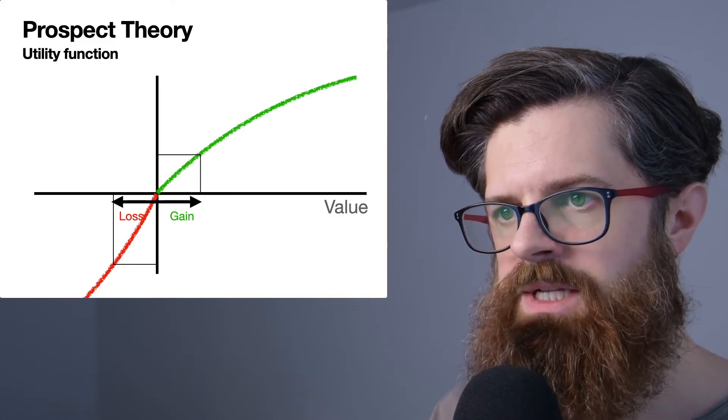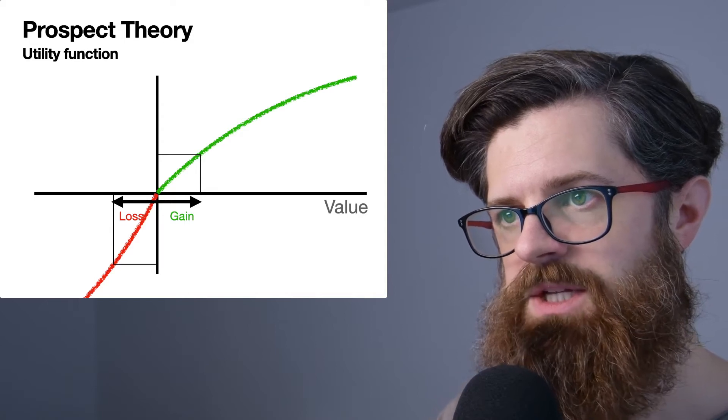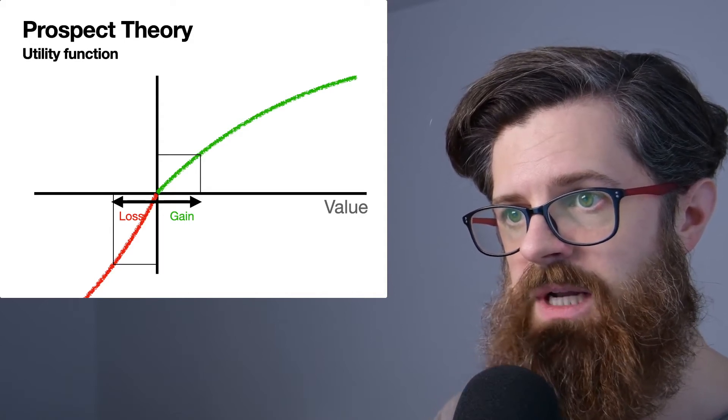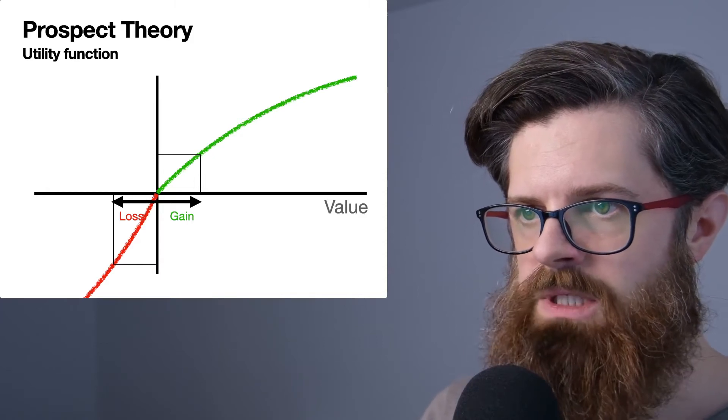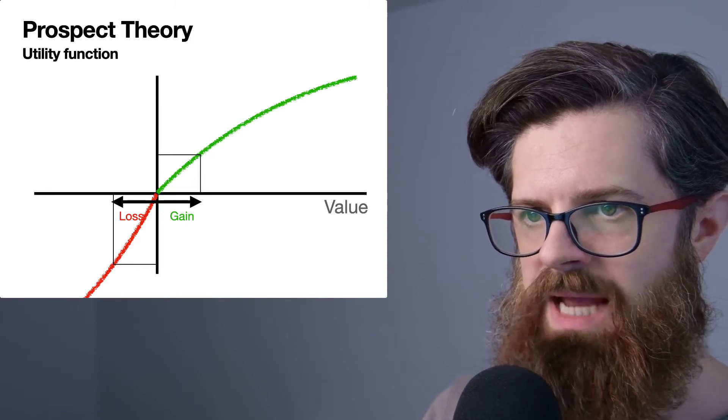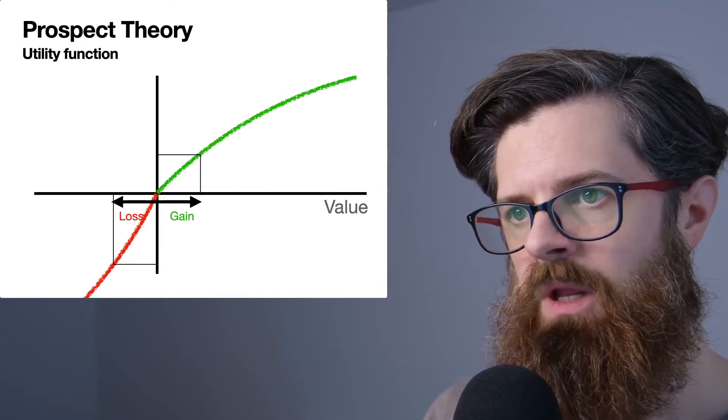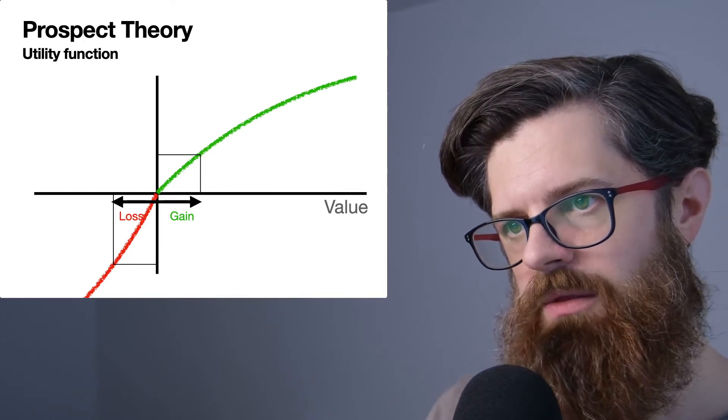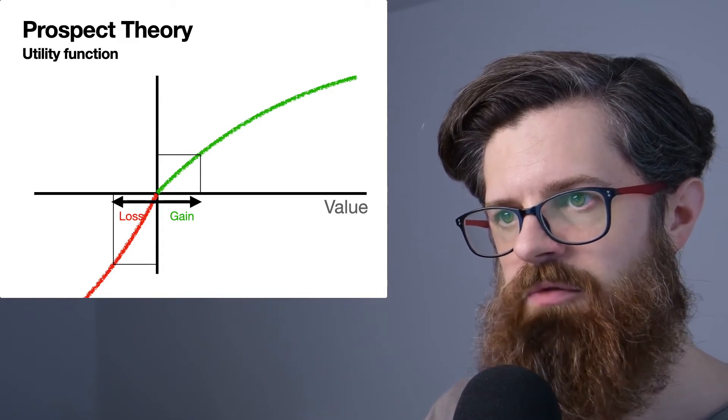There is one other major change which exists in prospect theory's utility function: rather than focusing upon the absolute amount of money that we may have, this curve can shift around according to a certain reference point.